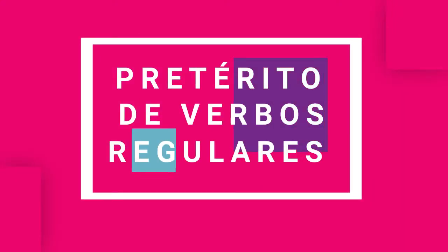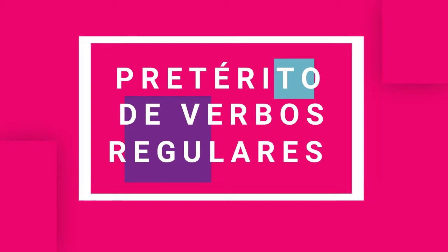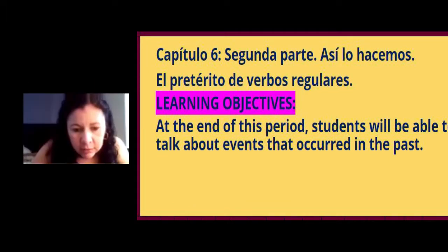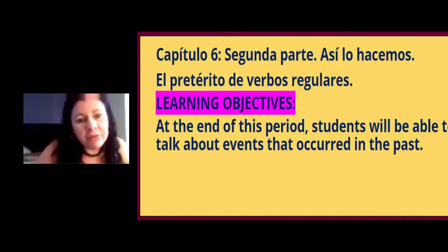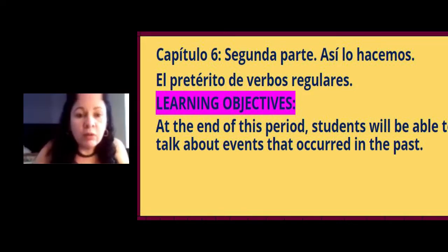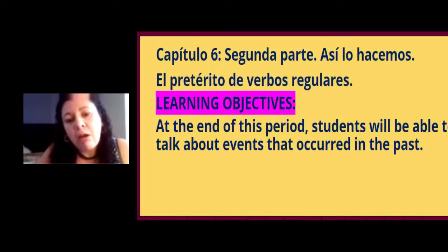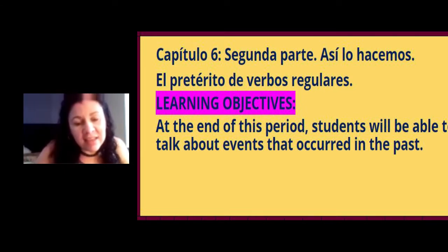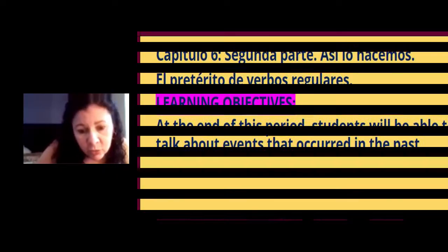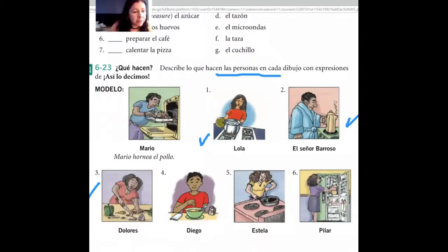Hi guys, third session of the day, number one in our Spanish 1-12 class, summer 3. Let me share with you what we have here for this session. On the class calendar, we have it there. We're going to be studying the regular verbs in preterito, and at the end of the period, we'll be able to talk about events that occurred in the past. Let's go to our textbook to take a look at what we will be talking about.